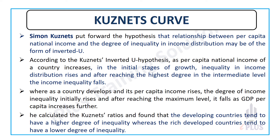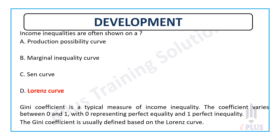Income increases up to a particular level, and inequality also increases. After a certain turning point, as per capita income continues to increase, income inequality starts to decrease. Developing countries have a higher degree of inequality than developed countries because their per capita income is below the turning point, meaning income inequality is relatively high.